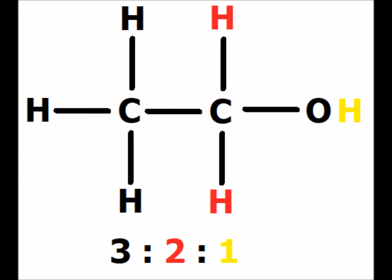The third type of hydrogen is a methyl hydrogen, shown in black. You would therefore have integrated values for the proton resonances in ratios of 3 to 2 to 1: three of the black methyls, two of the methylene hydrogens directly connected to the alpha carbon, and one hydroxyl hydrogen shown in yellow.